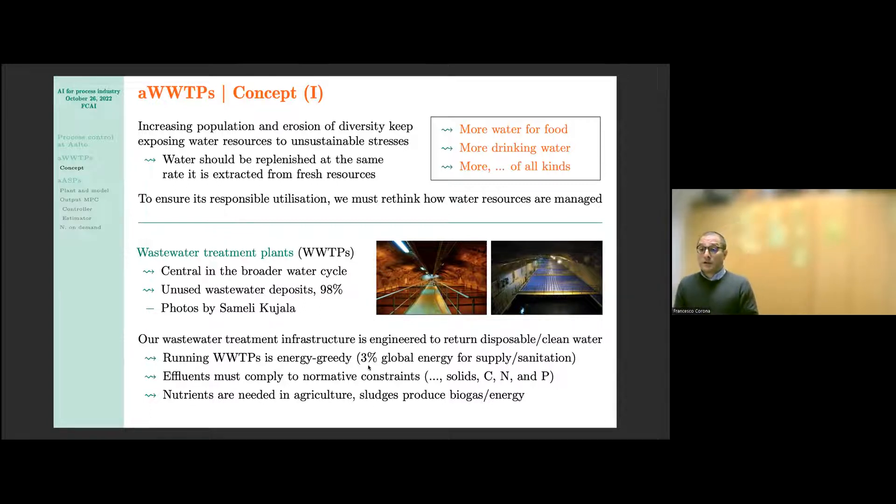The process is highly energy demanding. If we look at how much energy on a global scale we need to operate our water facilities, this amounts to about three percent of the total need. The effluents are rich in chemicals, and these chemicals are extremely valuable, for example, in agriculture and aquaculture, and the sludges are clearly very valuable for the production of biogas and then for the production of electricity.